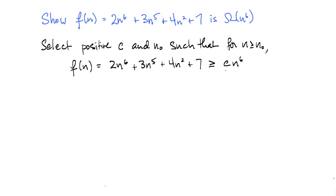The first case we're going to discuss is when all of the coefficients of the polynomial that we want to lower bound are positive. We're going to show that this function f, which is a degree 6 polynomial, is omega of n to the 6.